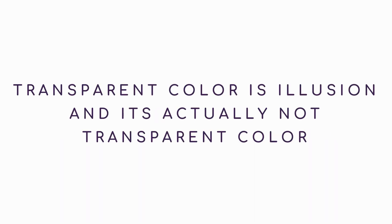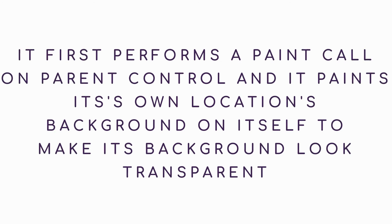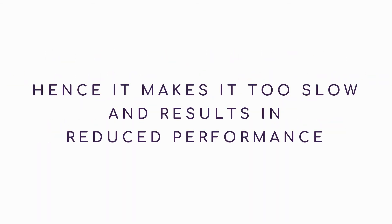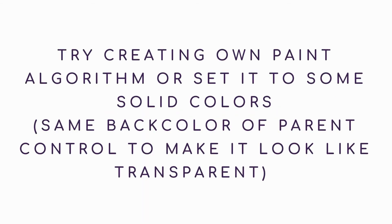Transparent color is an illusion — it's actually not a transparent color. It first performs a paint call on the parent control and paints its own location's background on itself to make its background look transparent, hence making it too slow and resulting in reduced performance. To fix this, try creating your own paint algorithm or set it to the same solid back color as the parent control to make it look transparent.